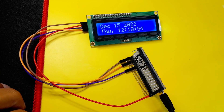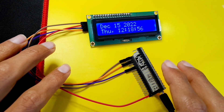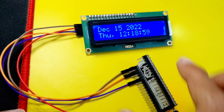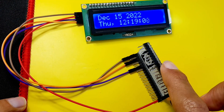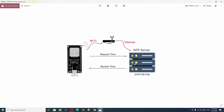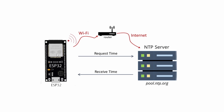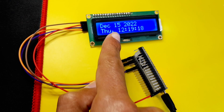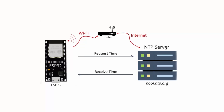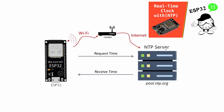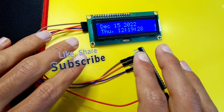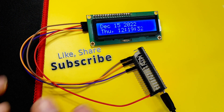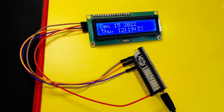Hey everyone and welcome back to my YouTube channel. In this new video I am going to show you how to use the LCD display with the ESP32 board. We are going to make a simple project using the ESP32 Wi-Fi capability to request the date and time from the NTP server and display your local time on the LCD display. Make sure to smash the subscribe button and the notifications bell so that you don't miss my next videos.